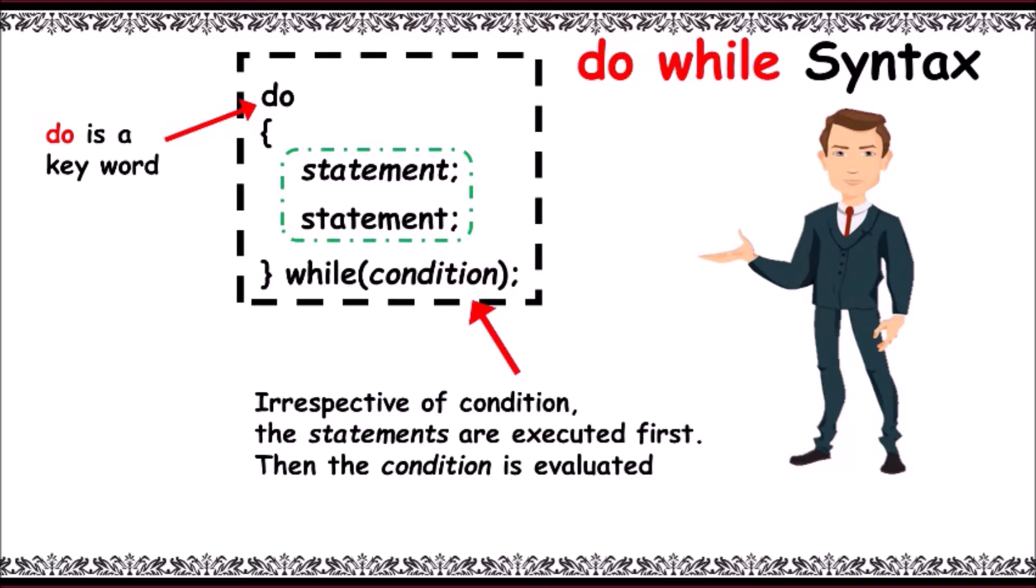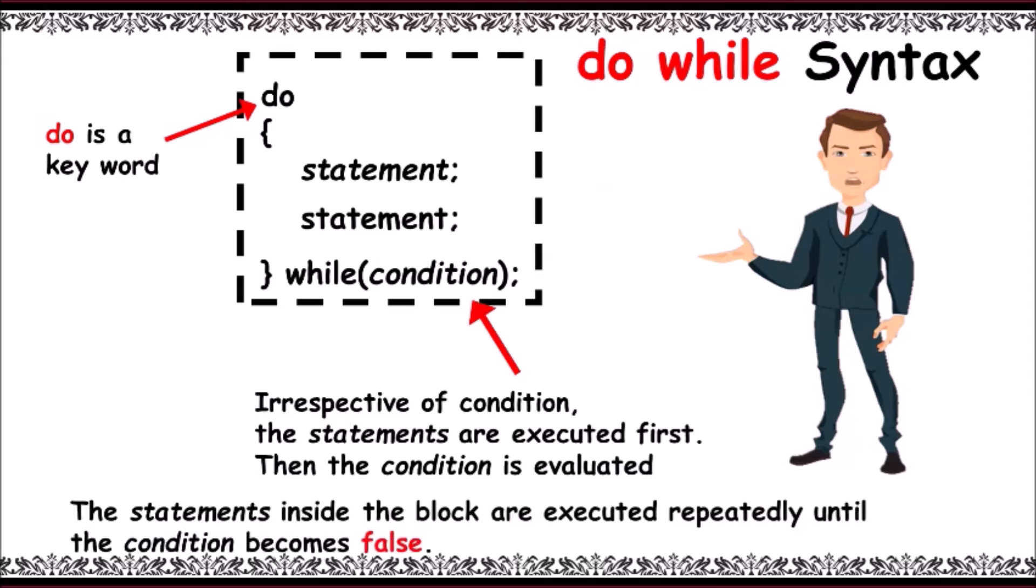And then the condition is evaluated. If it's true, control goes back to the starting of the loop and executes the statements inside the loop. The statements inside the block are executed repeatedly until the condition becomes false.